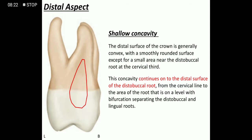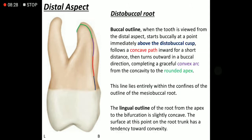This shallow concavity continues on the distobuccal root and ends somewhere near the bifurcation. The buccal outline of the distobuccal root starts from where the distobuccal cusp ends, follows a concave path, then a convex arch, and ends into a round apex.